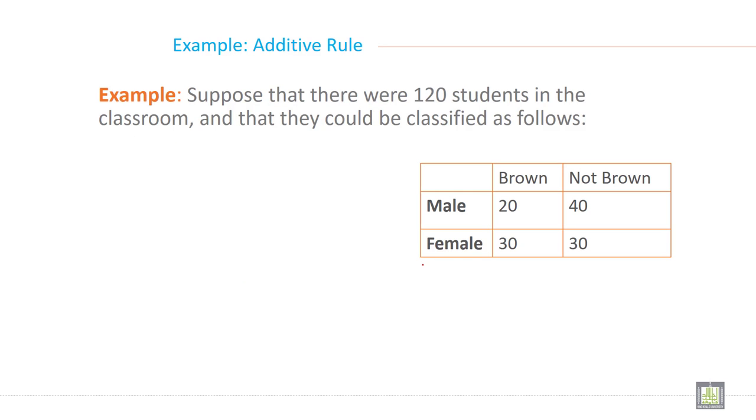Example: Suppose that there were 120 students in the classroom and that they could be classified as follows. Male: 20 brown hair and 40 not brown. Female: 30 brown hair and 30 not brown.